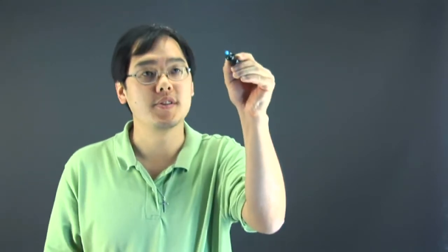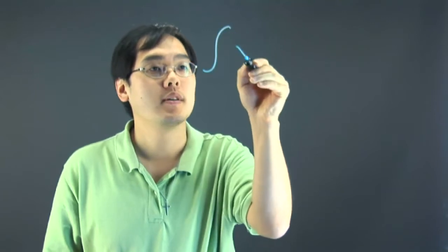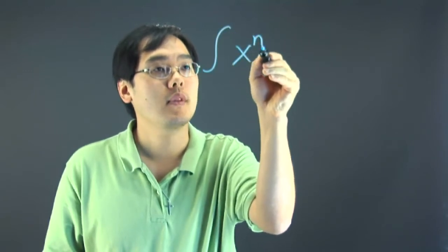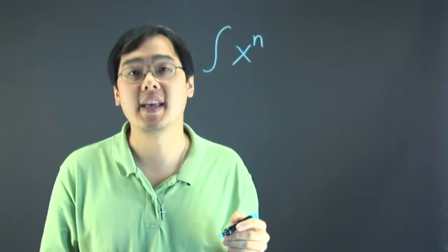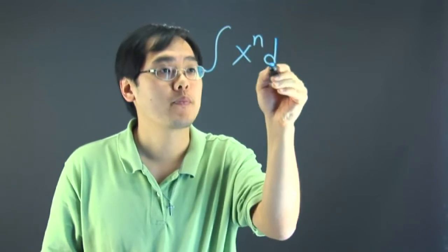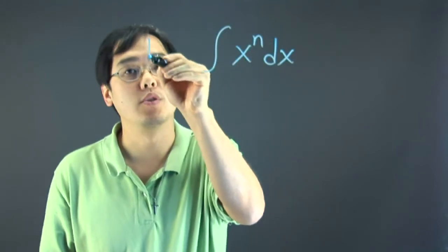We're going to talk about a couple of rules that will help, especially when it comes to integrating algebraic functions, especially the ones involving polynomials. So the one rule that you want to consider is what happens when you want to integrate a function or any term that's x to the n power. Now, n is the exponent. This is known as the power rule.